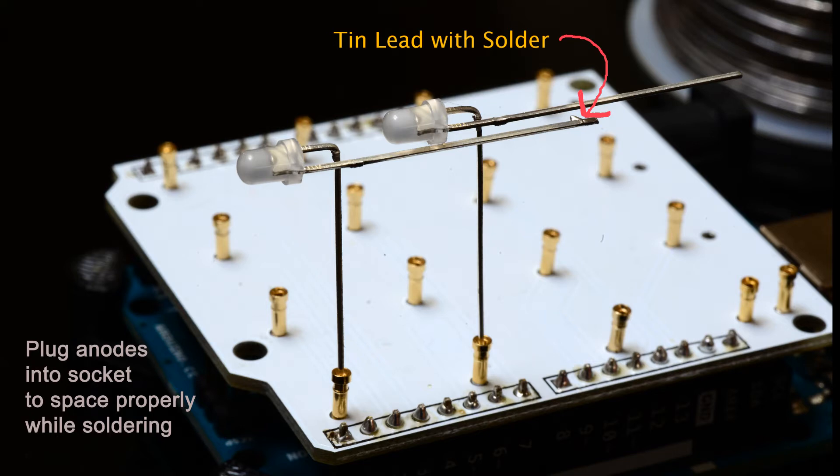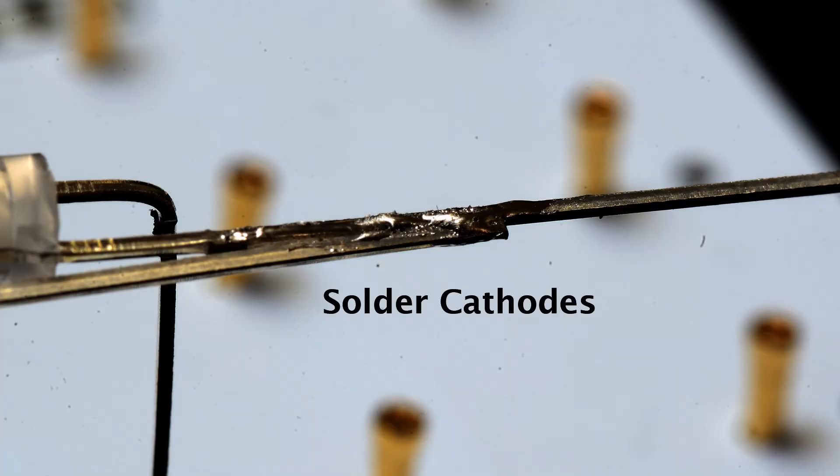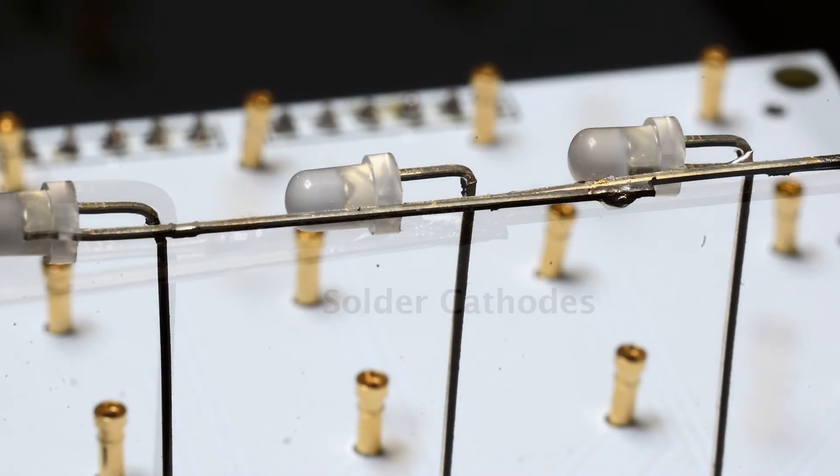Use the shield to help align the LEDs by plugging the anodes into the sockets. Solder the cathodes together as shown, putting three LEDs together at a time.